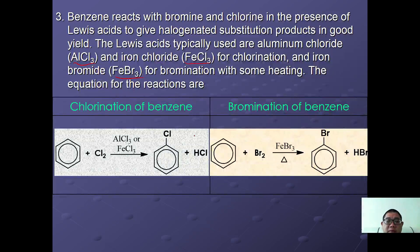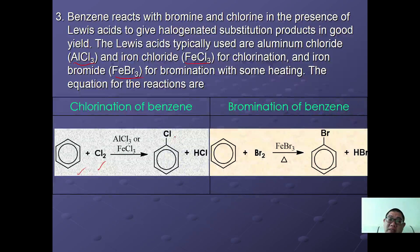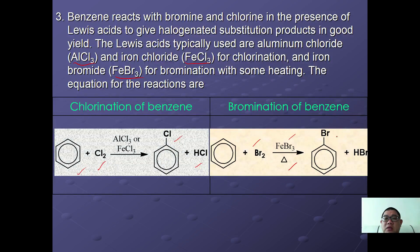The equations for the reactions are described in the table below. For chlorination of benzene, benzene reacts with chlorine under the catalyst AlCl3 or FeCl3 to form chlorobenzene with HCl as a side product.